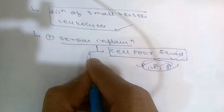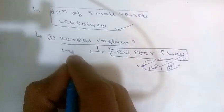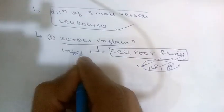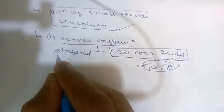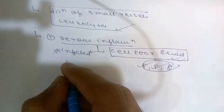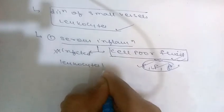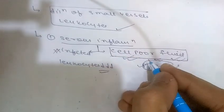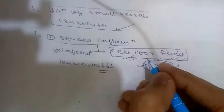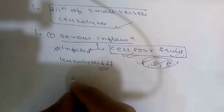The fluid in serous inflammation is not infected by destructive organisms, so it will not contain a large number of leukocytes. The number of leukocytes is very less — this is why we call it cell-poor fluid.